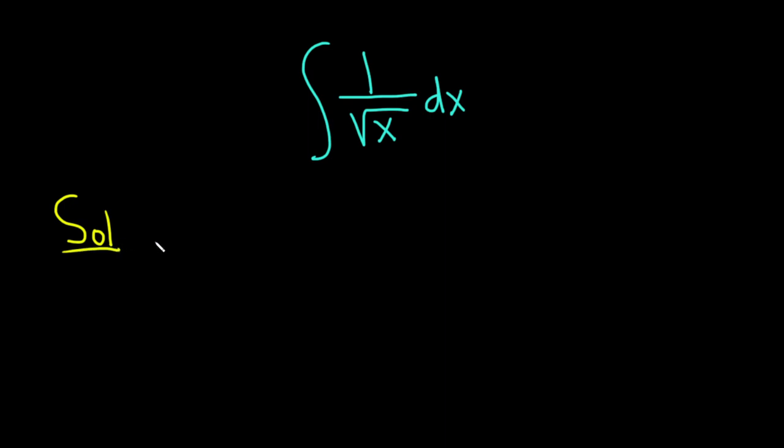The goal is to use something called the power rule, which allows us to integrate x to a power as long as that power is not negative 1. So whenever you have the square root of x, you can write that as x to the 1/2.